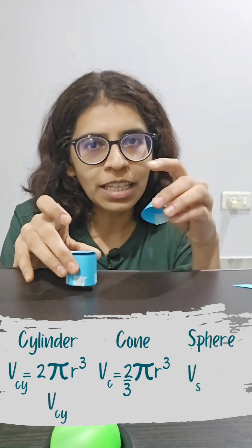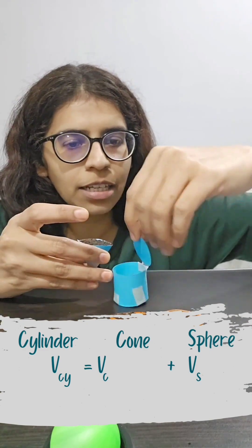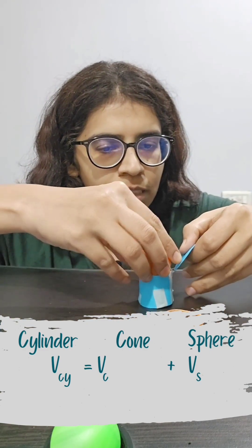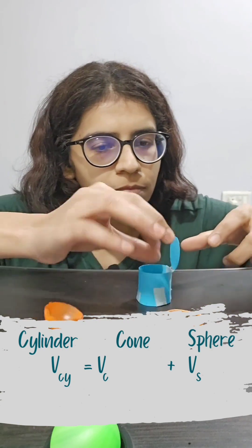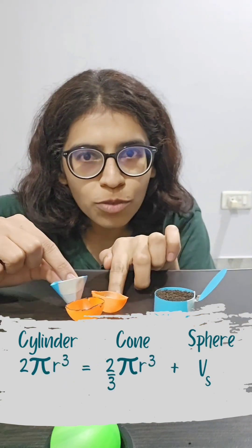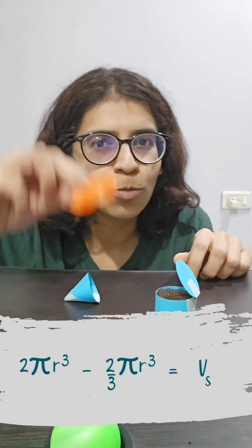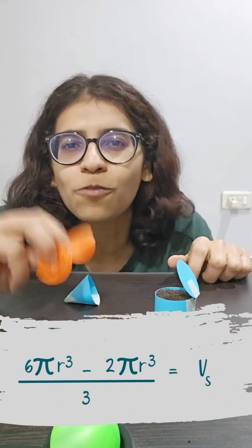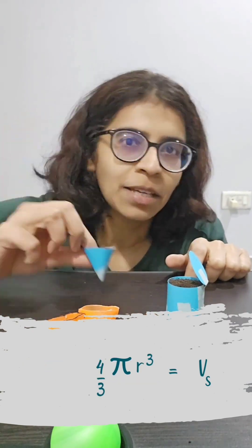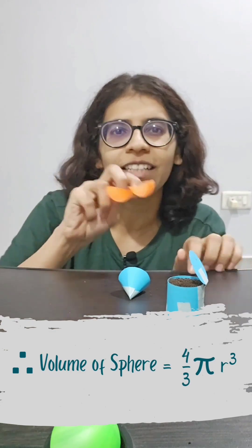The volume of this cylinder is equal to the volume of the cone plus the volume of the sphere. If you add up the volumes of the cone and the sphere, it equals the volume of the cylinder. Solving for the volume of the sphere: it will be 2πr³ minus 2/3 πr³, which gives you 4/3 πr³. Therefore, the volume of the sphere is 4/3 πr³.